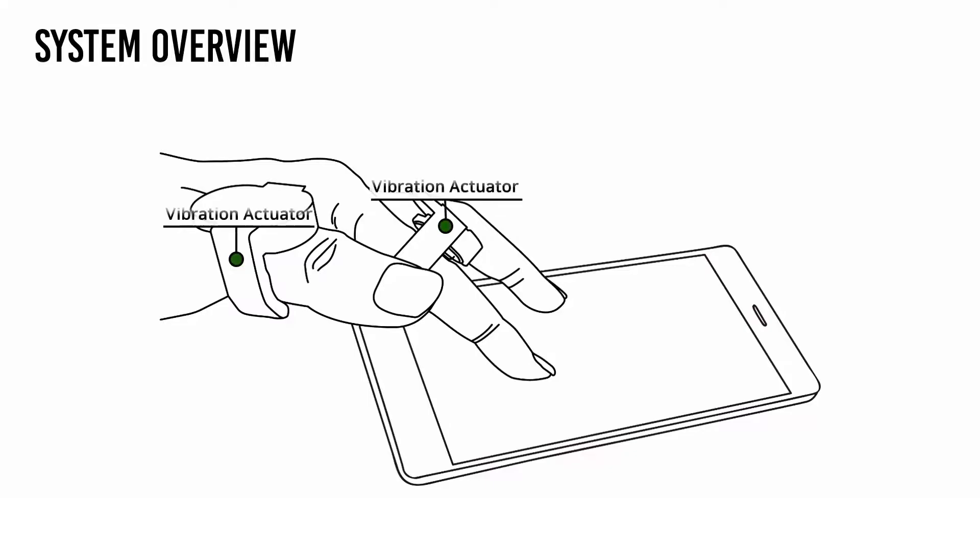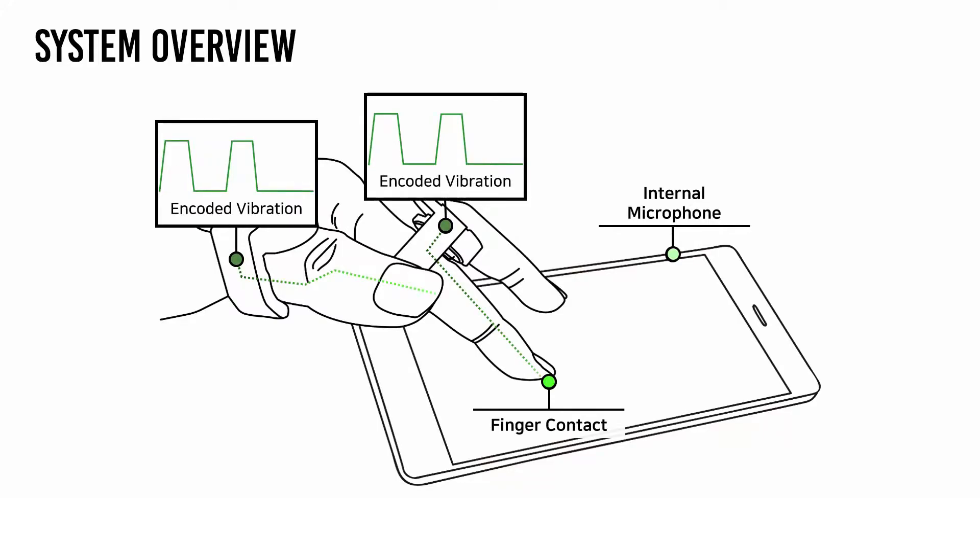Our system includes two ring-shaped transmitters and a touch surface with a microphone receiver. An encoded vibration emitted by one finger travels through the finger and then the surface. Only the vibrations from the contact fingers reach the receiver, and we can identify the contact fingers.